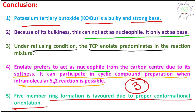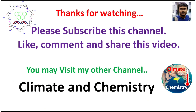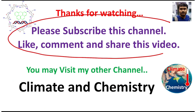Remember: five-membered ring formation is favored due to proper conformational orientation. The same applies to three-membered ring formation, but three-membered rings have relatively more angular strain compared to five-membered ones. This is the end of the discussion. I believe this may be useful — please write your opinion in the comment box, and if you consider my content worthy, please help this channel too.